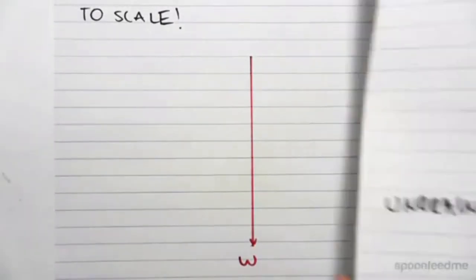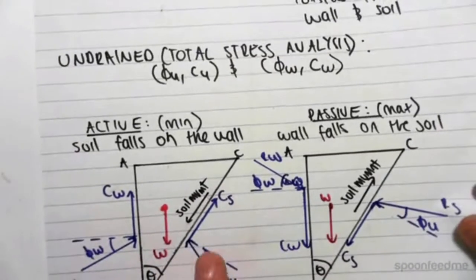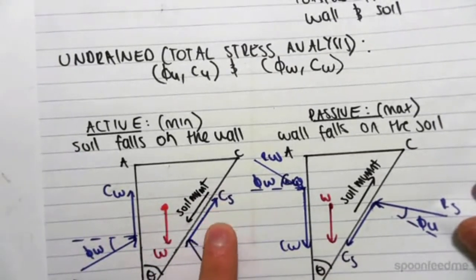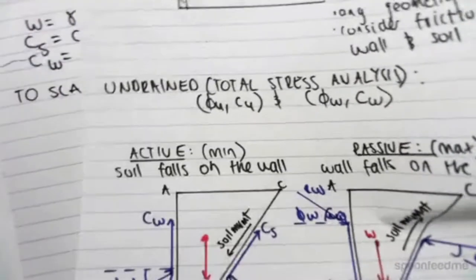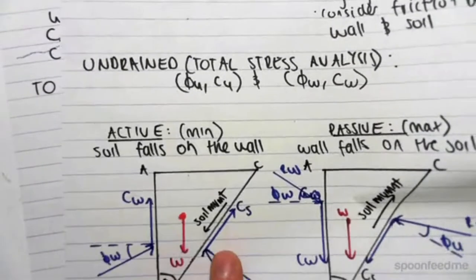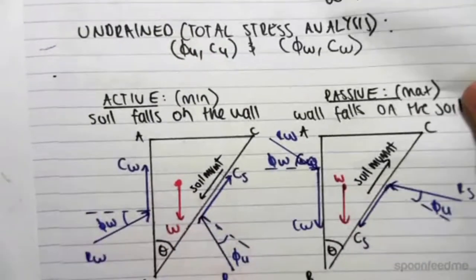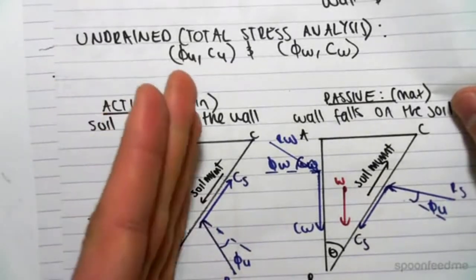The next force we draw in would be the CS force. We know the value of that because we have CS up here. So we could draw in CS. Now CS is at an angle of theta to the vertical.